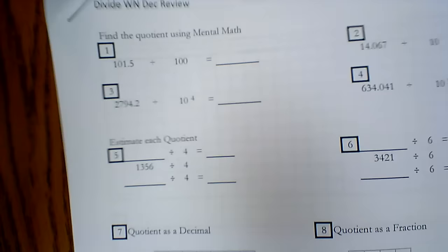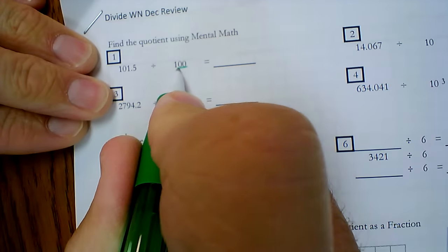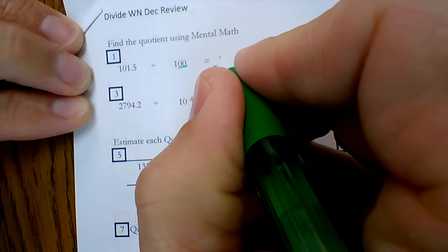So first, we're going to start with the mental math. When we're dividing by powers of 10, the key is to count the zeros and move the decimal point that many times. Because we're dividing, we're going to move it to the left.